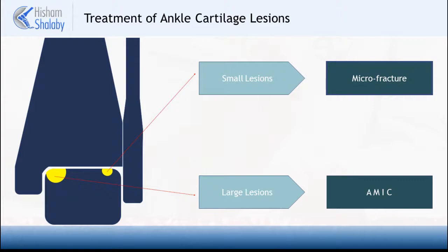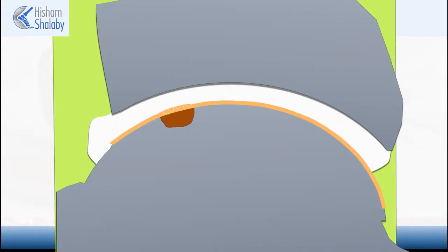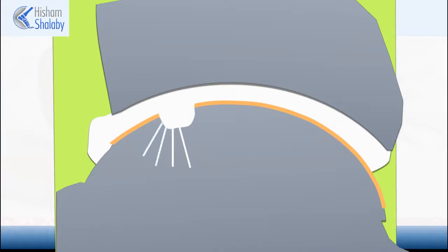The management of larger lesions can be done with several surgical treatment modalities and will be discussed in a different video. In this video, I will explain the surgical management of smaller lesions using a technique called microfracture. This is a keyhole surgery during which the lesion is identified, the overlying unsupported cartilage is removed, and the lesion is debrided, clearing the non-viable bone down to healthy bone. The bed of the lesion is then drilled with multiple drill holes, allowing blood to come from the healthier part of the bone towards the lesion, forming a small blood clot to fill the lesion.